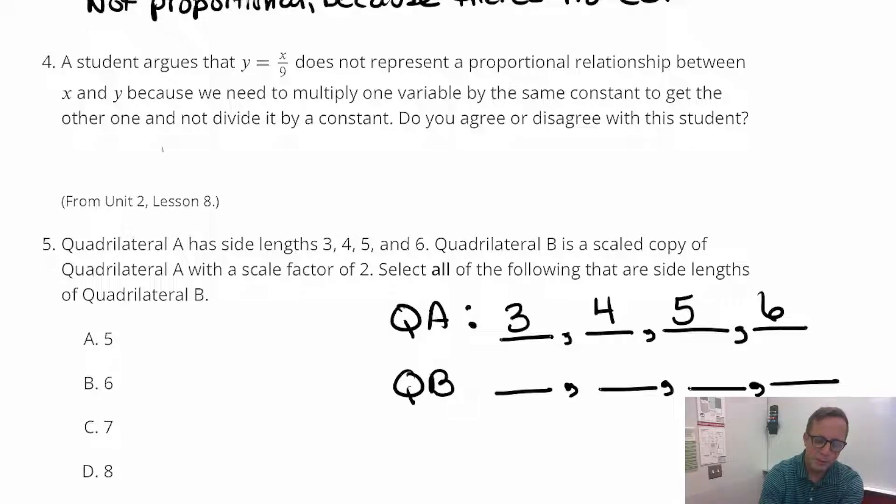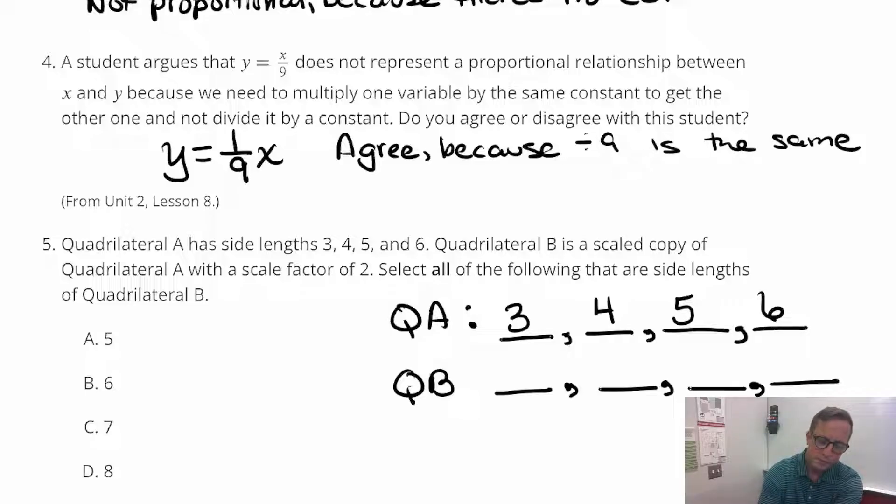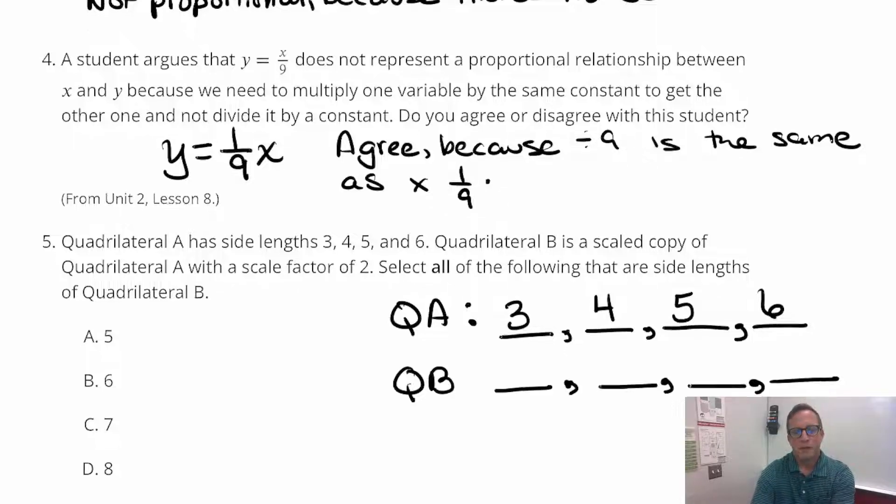So yeah, this could be, if I want to express this in maybe clearer terms, we can write this as y equals one ninth x. Just like that. So now it looks more like a multiplication problem. It always was that kind of problem but one ninth x kind of looks like the y equals kx type form. So I agree and you should too. I agree because dividing by 9 is the same as multiplying by one ninth.